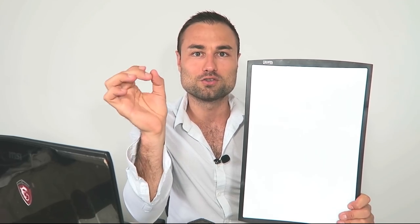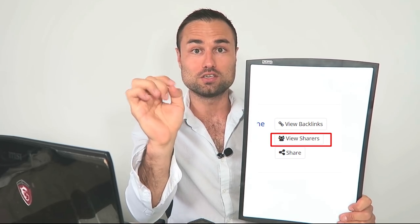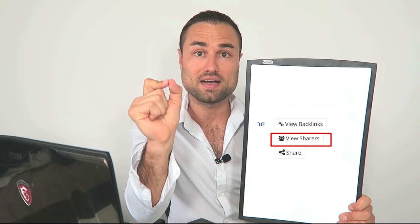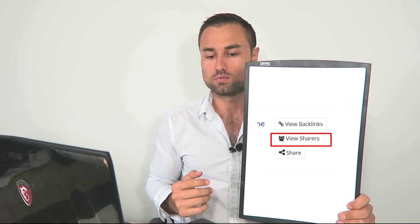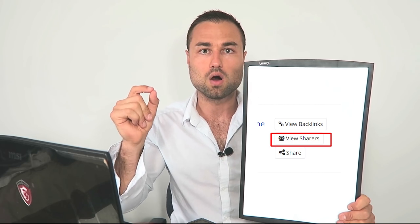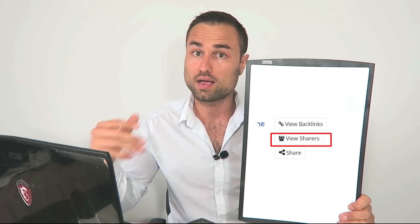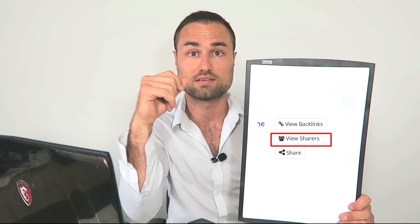When you click 'View Shares,' it shows all the people on Twitter that shared that exact same article. You want to find out their email — if you can't get their email, get their Twitter account, but preferably find their email. A really good tool for this is Rapportive — R-A-P-P-O-R-T-I-V-E dot com — it's a Chrome Gmail plug-in. You plug it in, guess the email, and if you're right it shows you all the social profiles of that individual.